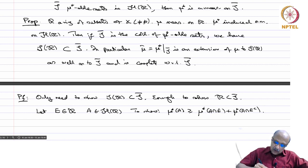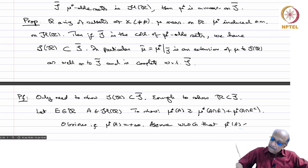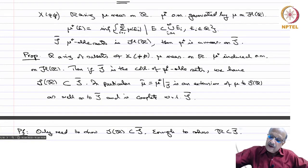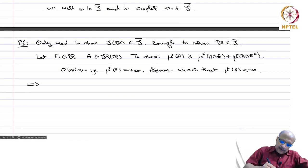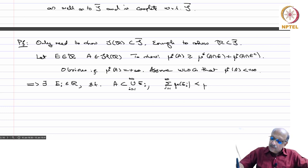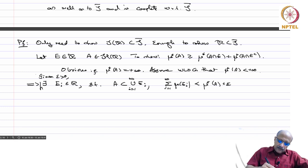The case mu*(A) equals plus infinity is obvious since this side is infinity. So assume without loss of generality that mu*(A) is finite. By definition of mu*(A), if it is finite, there exist E_i in R such that A is contained in the union from i=1 to infinity of E_i, and sigma mu(E_i) from i=1 to infinity is less than mu*(A) plus epsilon. So given epsilon positive, you can find such a cover.